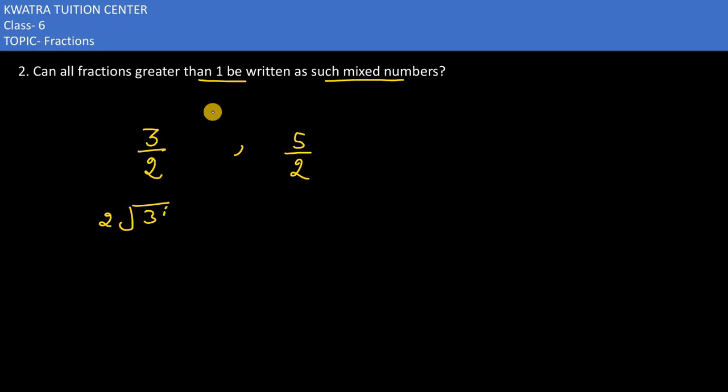3 and 2, so we divide. 1 times 2, here comes 2. After subtracting you would get 1, so what value do you get? 1 and 1 by 2.